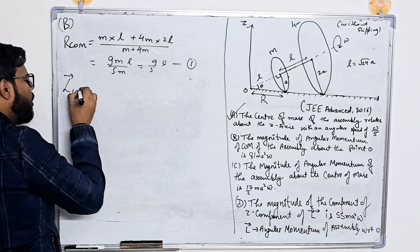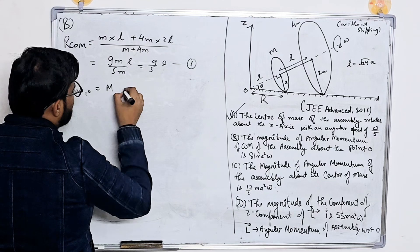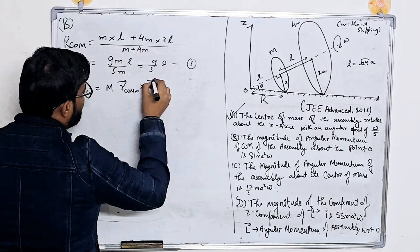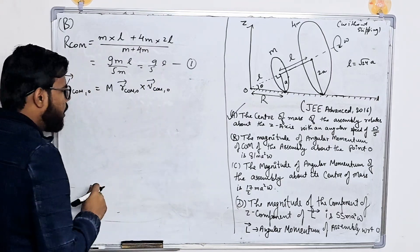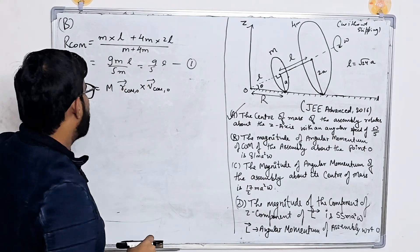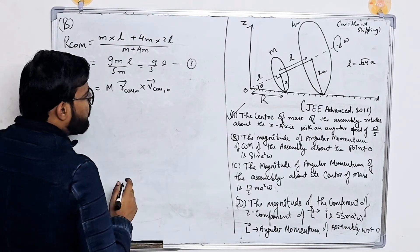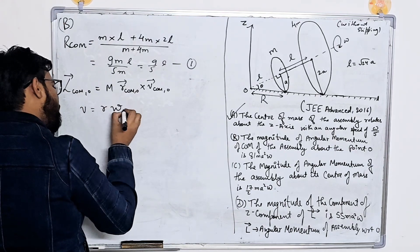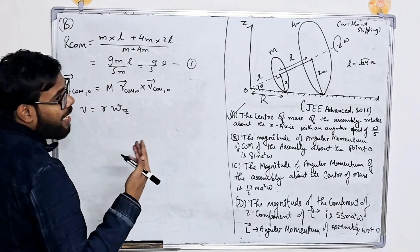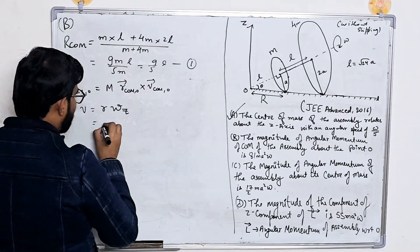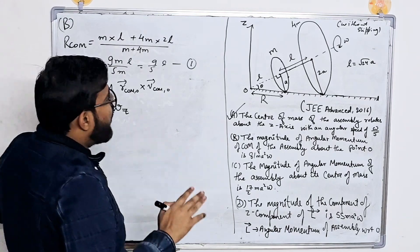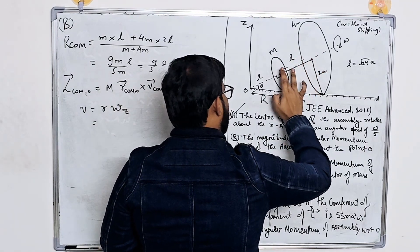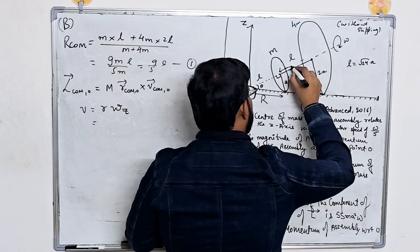We know that L_COM about O = mass × (R_vector of COM cross V_COM about O). We have calculated the position of the center of mass. Now we need to evaluate V_COM about O. V = R·omega_Z and we know omega_Z = omega/5. Here R is the radius of the circle traced by the center of mass about the Z axis.